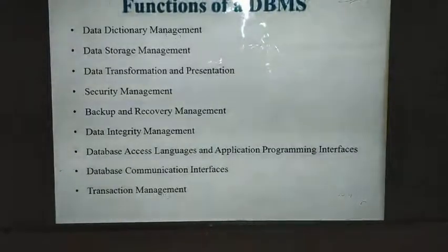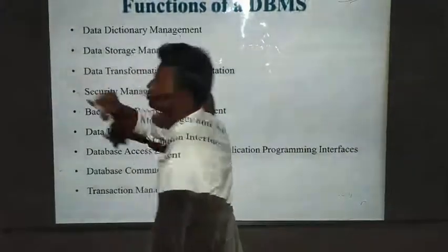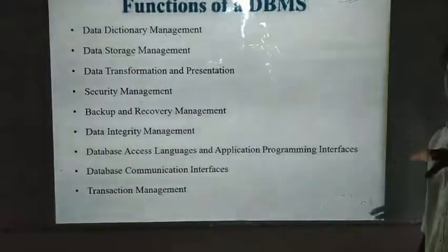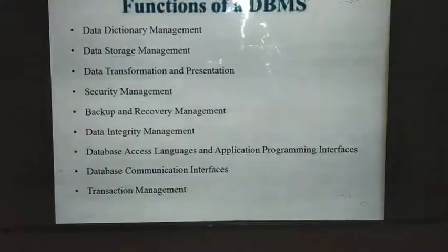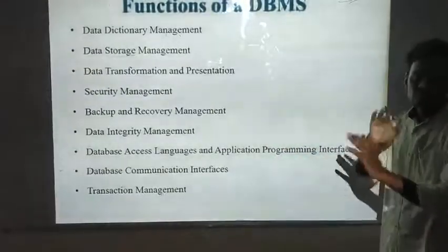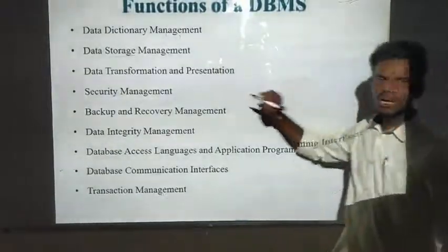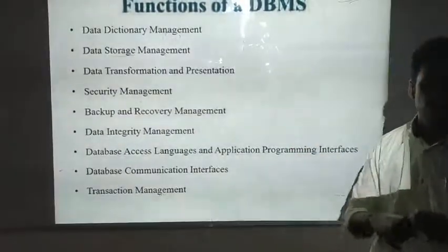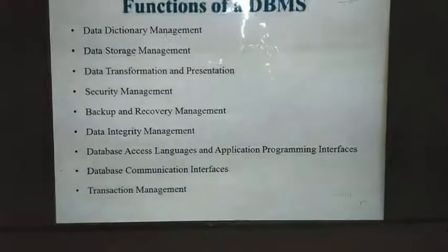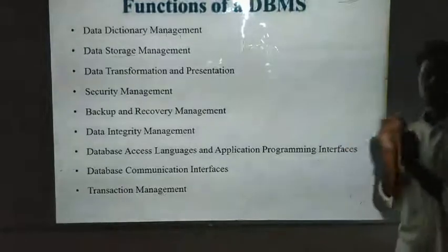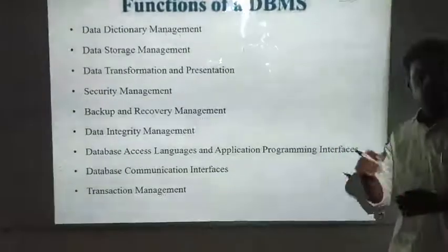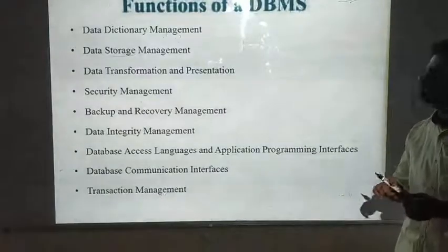The next function is data storage management. This is where we actually store the data — physically storing the data somewhere using some devices. We use the data storage management function for this. It creates a complex data structure in which you want to store your data. A physical structure is created to store the data. If you want to store data onto physical devices, the storage management will create the structure. It avoids fixed physical data characteristics — if you change the structure at the physical layer, it won't affect your logical structure.